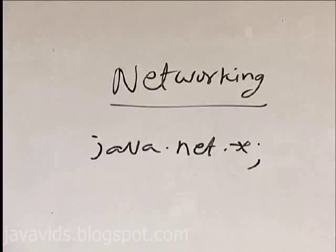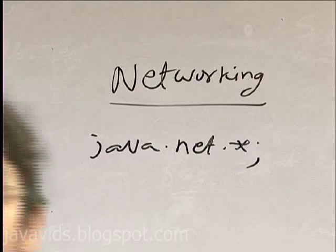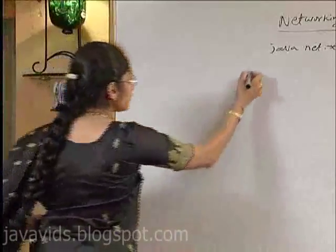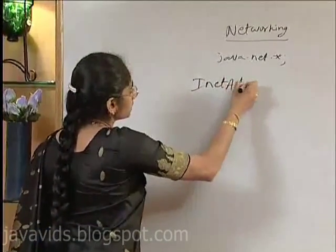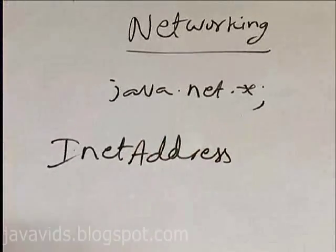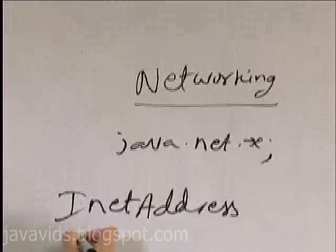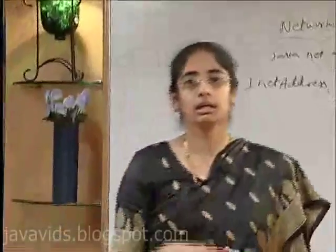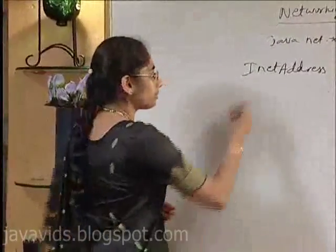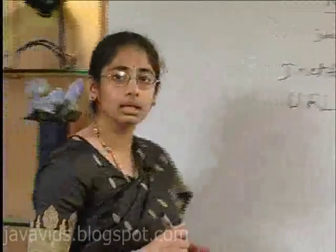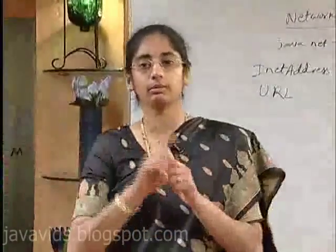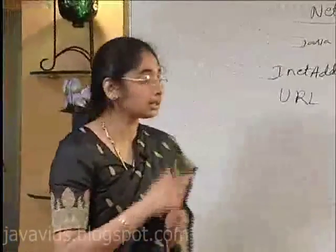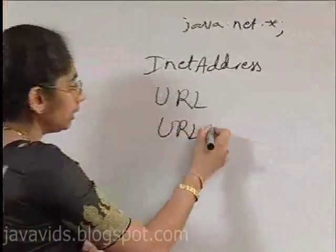When you want to talk to some program on another machine, you need to specify the address of that machine. We have an InetAddress class using which we can specify the address of the machine. If you want to communicate across an internet rather than within your intranet, then we need to specify a URL. When you specify a URL, a connection is opened between your machine and the specified URL, and that connection is maintained by the URLConnection class.